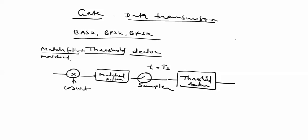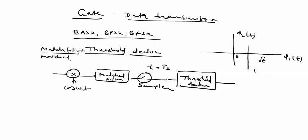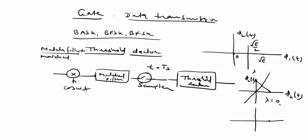The threshold detector is always decided from the constellation diagram. In ASK, the constellation diagram has S1(t) and S2(t), and the threshold is the value between them. In FSK, both components are orthogonal to each other; we decide threshold as 0. In PSK, the threshold lambda equals 0. In all cases we decide the threshold from the constellation diagram.